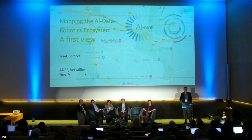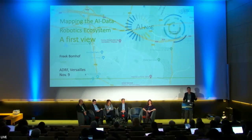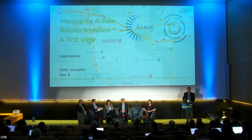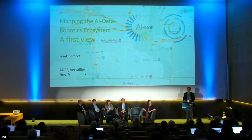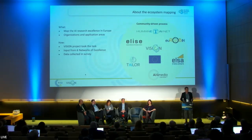We'll talk about SRIDA later — it's a document that tells us the direction from our current stage to some point in the future. But if you want to know where you are now, you need to know how to position yourself, and if you want to go from A to B, you need a map. That's precisely what the Commission asked us to do: create a mapping of AI, data, and robotics research in Europe. This task was picked up by the VISION project, a CSA coordinating the networks of excellence for trustworthy AI in Europe.